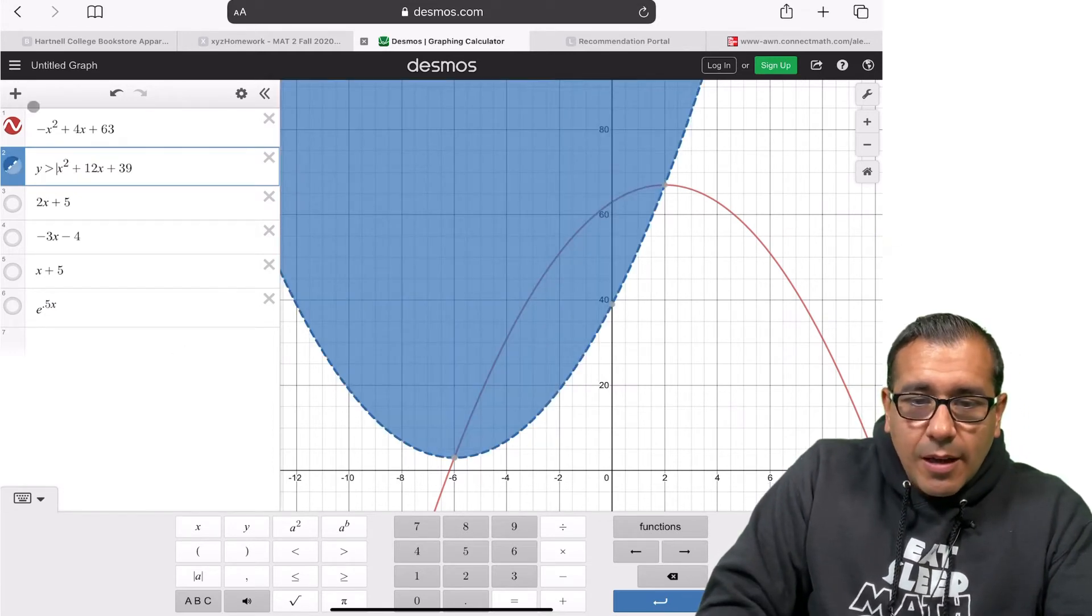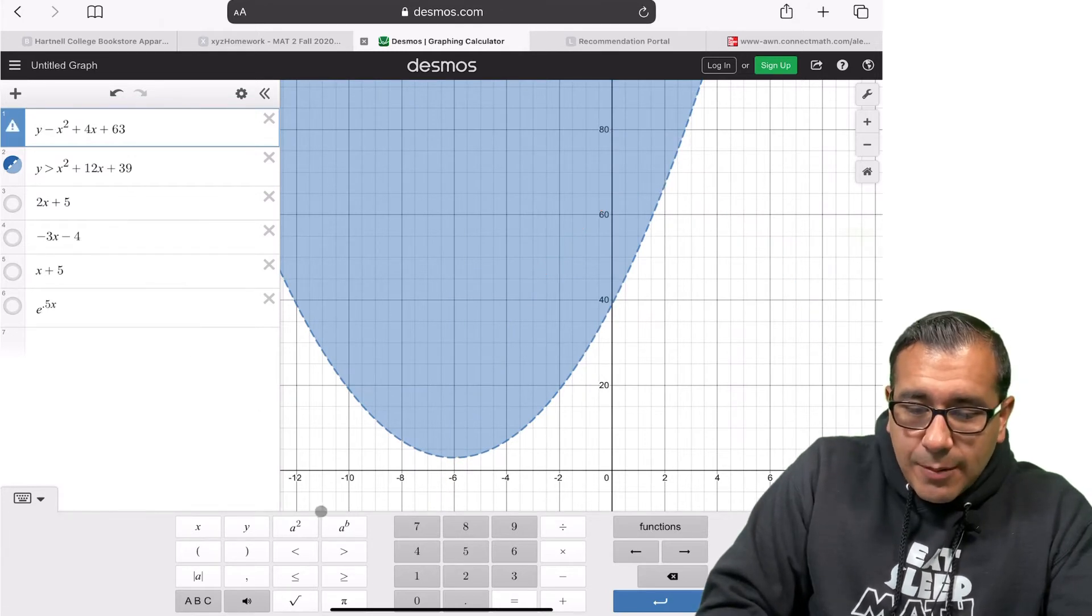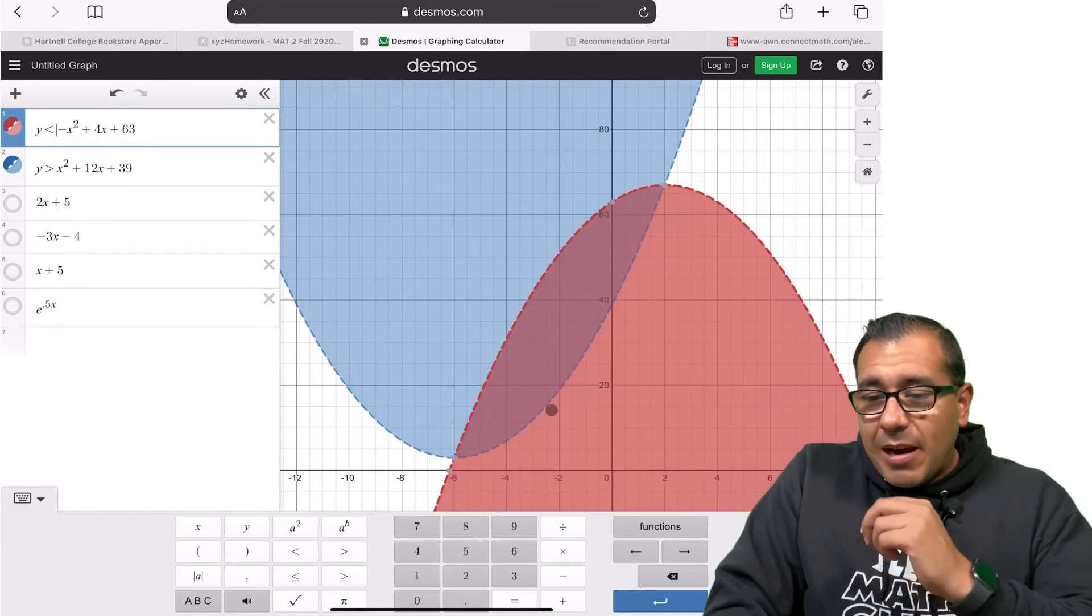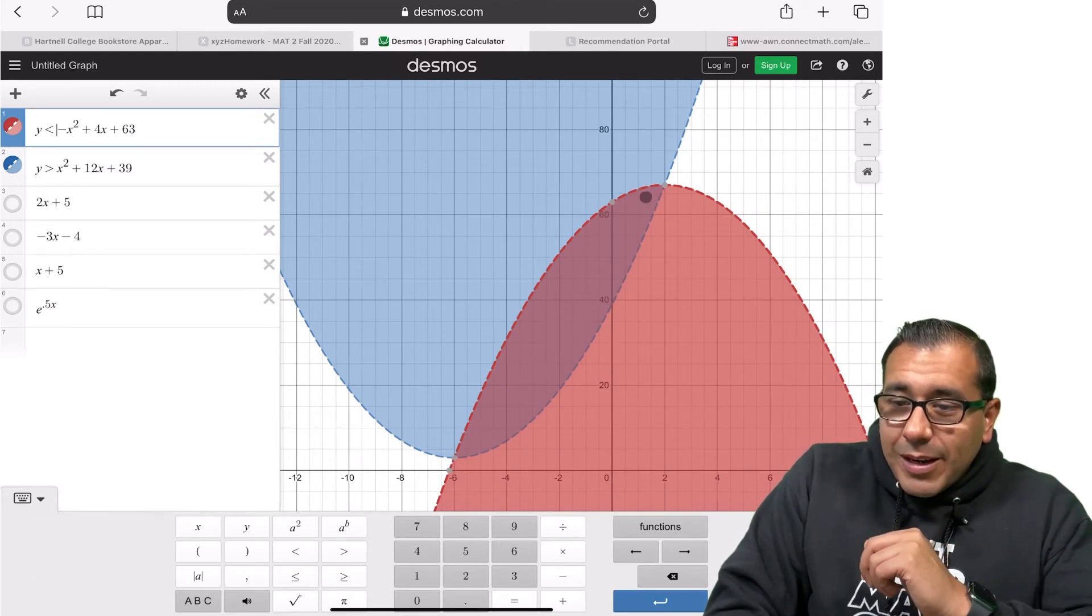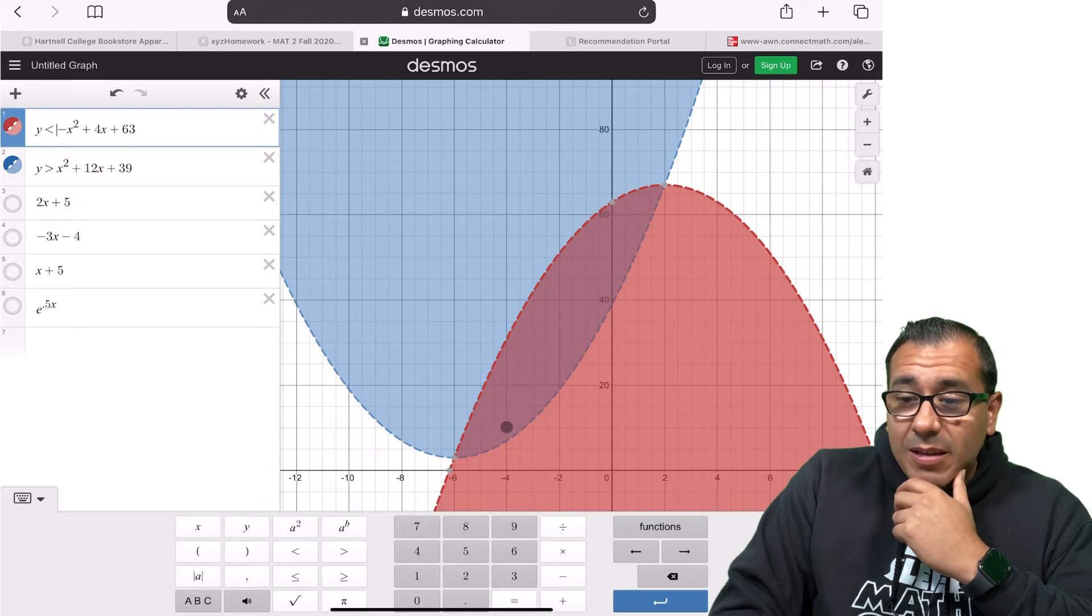And this one, let's make it y is less than. So this area right here in the middle, let's say we actually want to find this area that's bounded by these two curves.